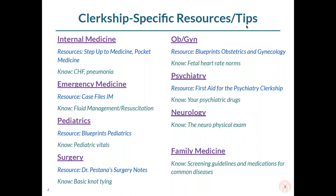The types of things to know for internal medicine are the bread and butter cases: heart failure, pneumonia, renal failure — things you'd see in a lot of patients coming into the hospital. You will shine if you know how to manage those few common diseases. For emergency medicine, we recommend Case Files — a short book presenting patient cases with questions that walks you through history, physical, and differential. For emergency medicine, you have to know fluid management and resuscitation, and when to consult other services like surgery or medicine.